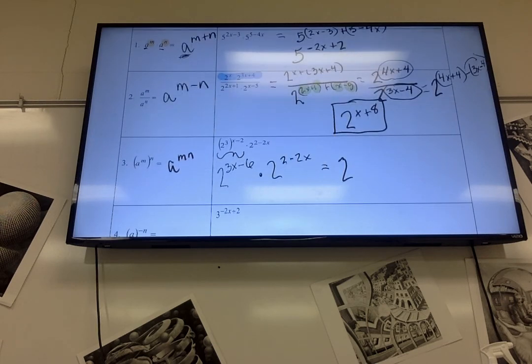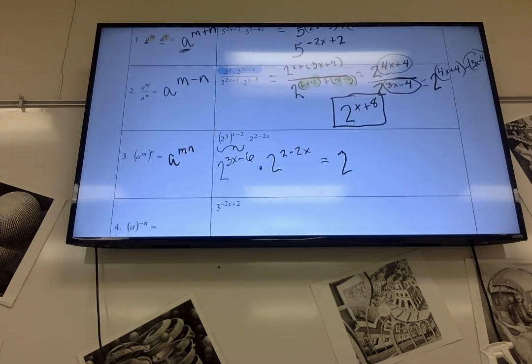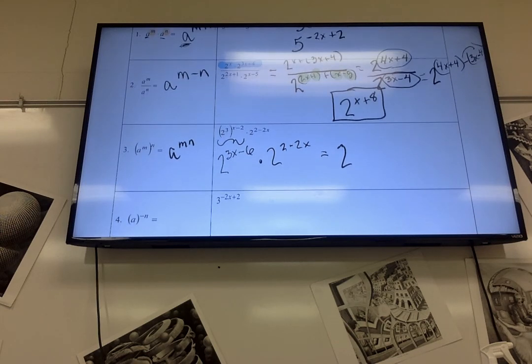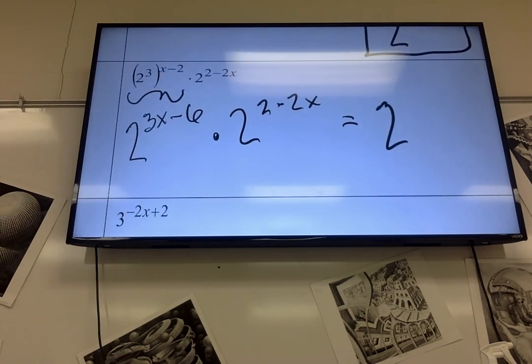Which is what we were doing here. So we have 2, this one right here, 3 times x minus 2. That's where the 3x minus 6 came from, raising a power to a power. That's for multiplying.